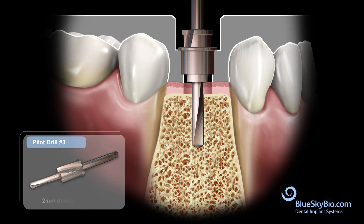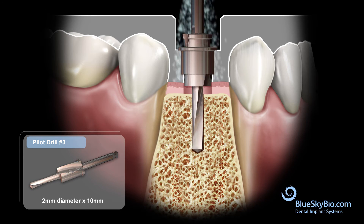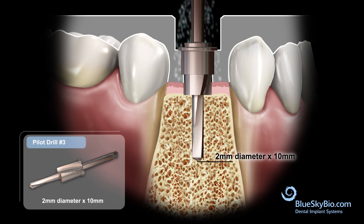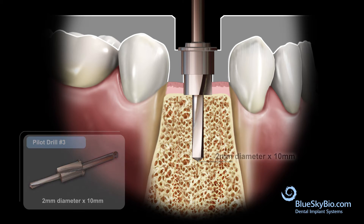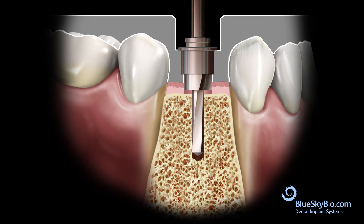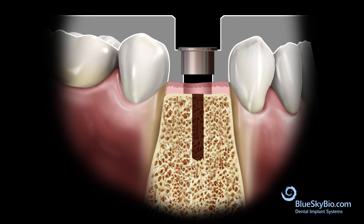Activate the drill and advance with irrigation until stopped by the master tube. The guided pilot hole is now completed. Blue Sky Bio drills have direct cut technology; therefore it is unnecessary to use every width in sequence. Proceed directly from the 2 millimeter drills to the next-to-last width drill required.